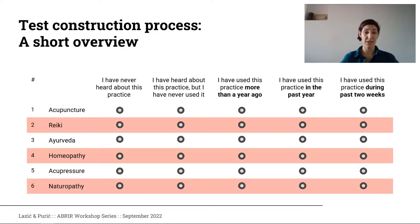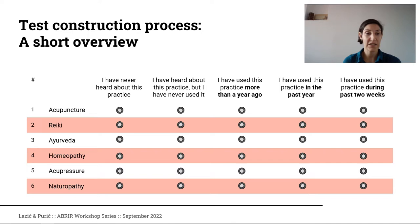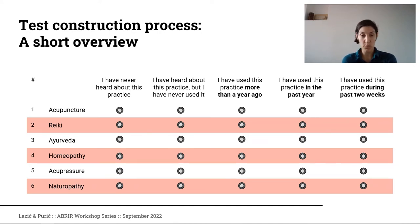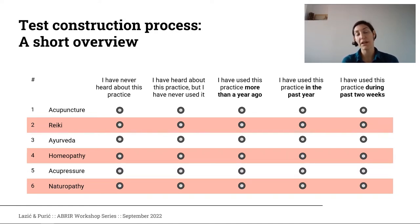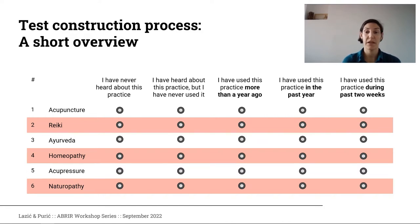The instrument presented participants with options: whether they had heard about the practice, whether they had heard about it but never used it, and if they used it, when — over a year ago, in the past year, or during the past few weeks. This was important because we wanted to assess both the familiarity with different practices and their use. Since the project is planning ambulatory assessment as well, we needed to see which practices would be most appropriate, which is why we included a category for practices used in the past two weeks.